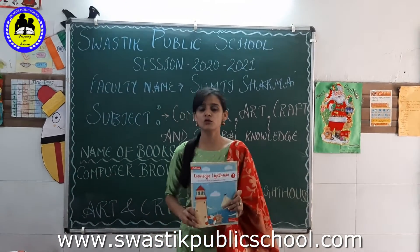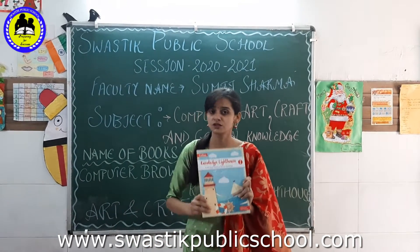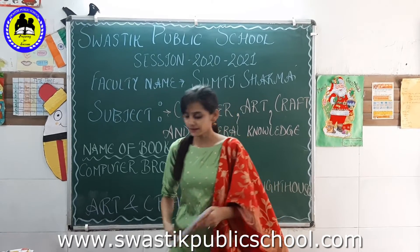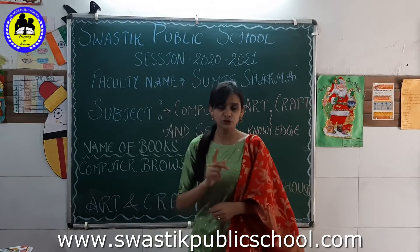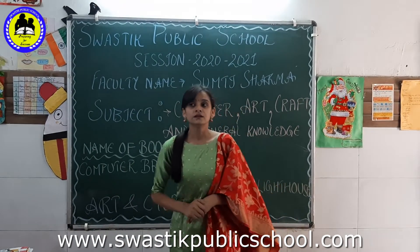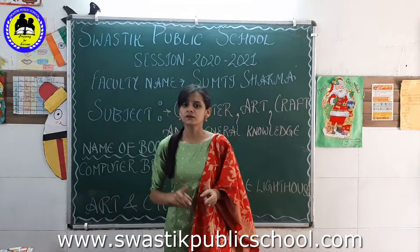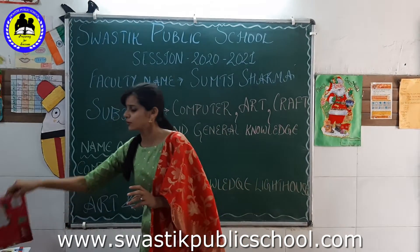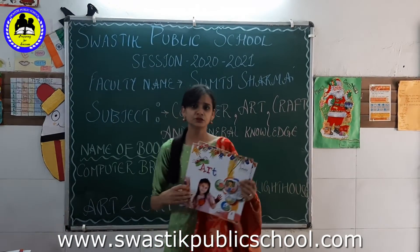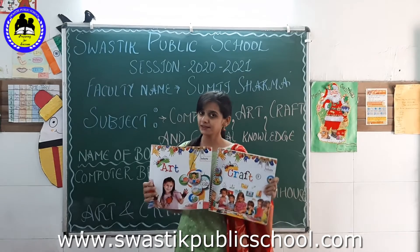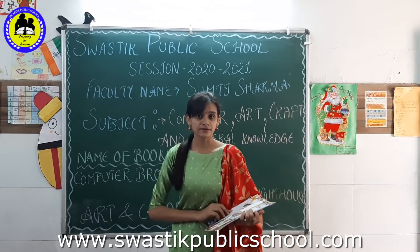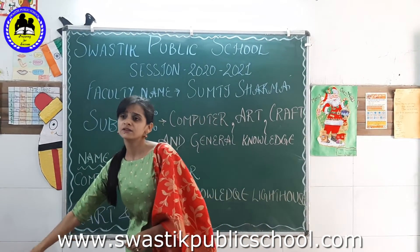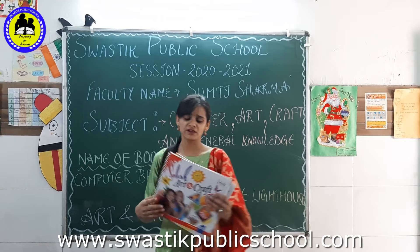There is a single book for general knowledge, but there is a difference in art and math. From class 1st to 5th, there are two separate books — one for art and one for math. But from class 6th to 8th, there is a single combined book for art and math, along with a drawing collection.